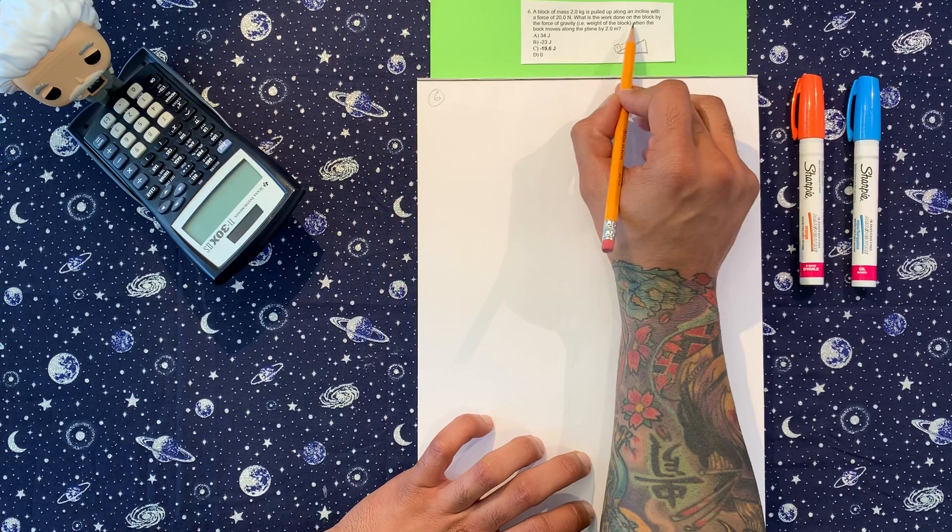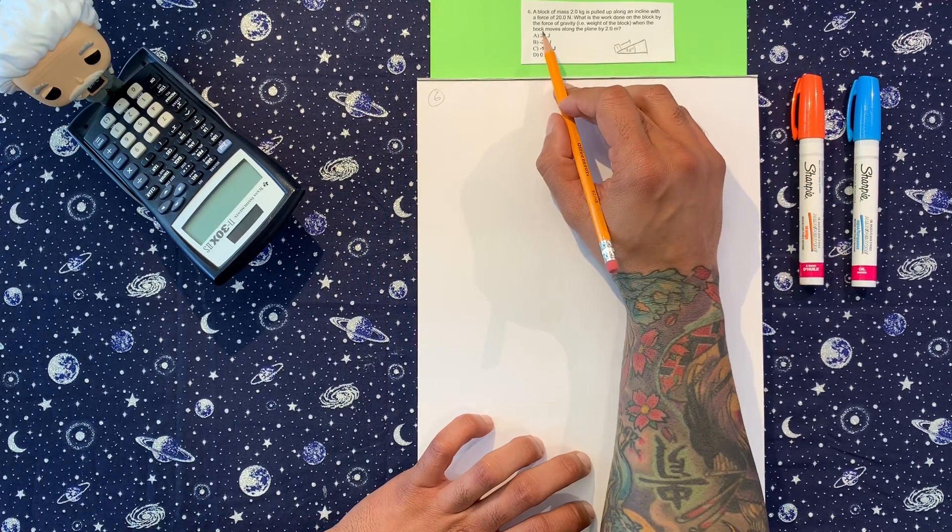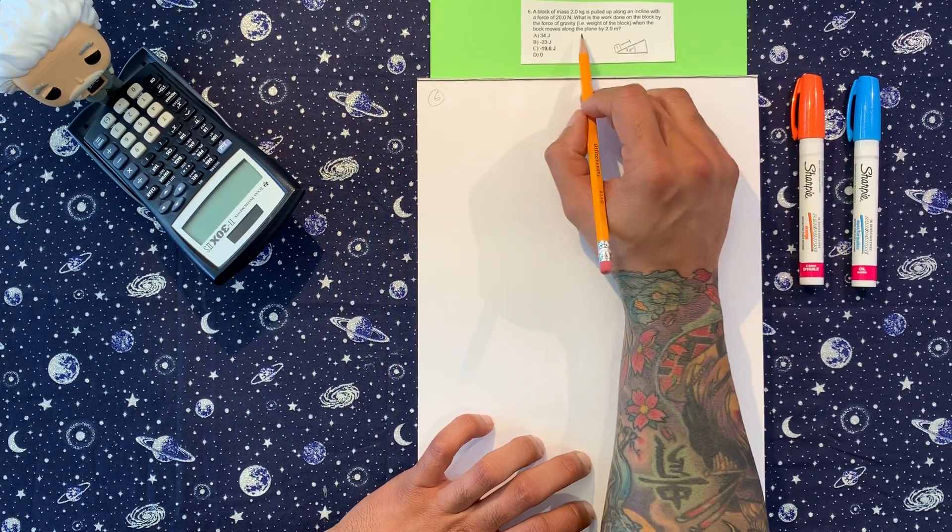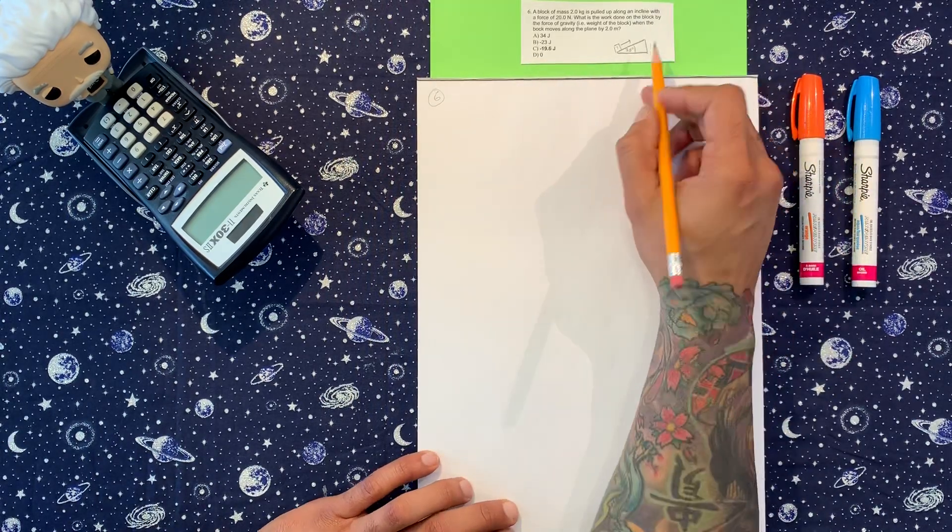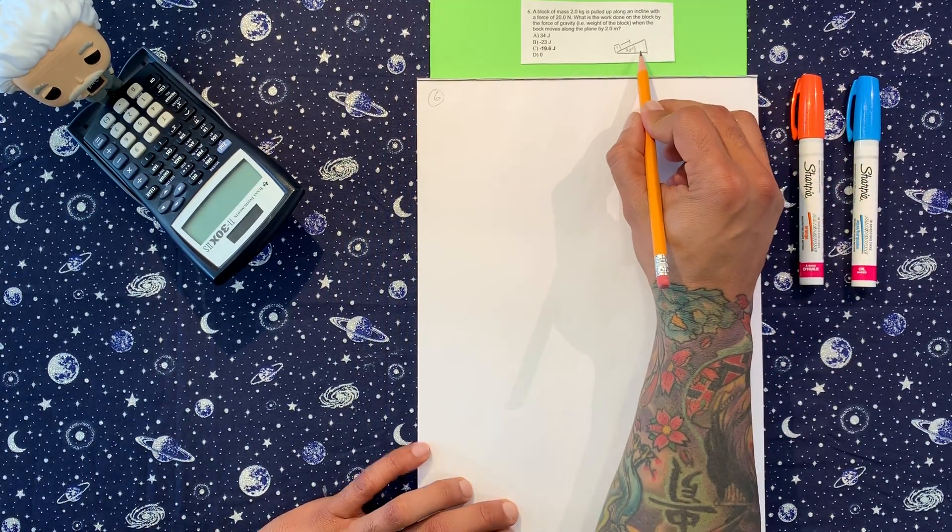i.e. the weight of the block, when the block, I was supposed to say block, moves along the plane by two meters. Okay, this is the diagram that they forgot to print on it.